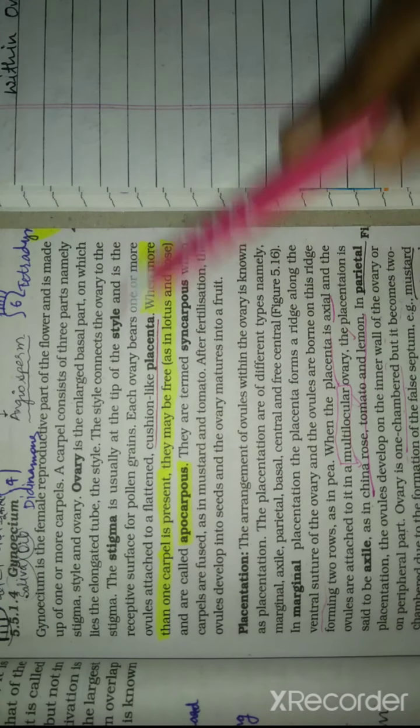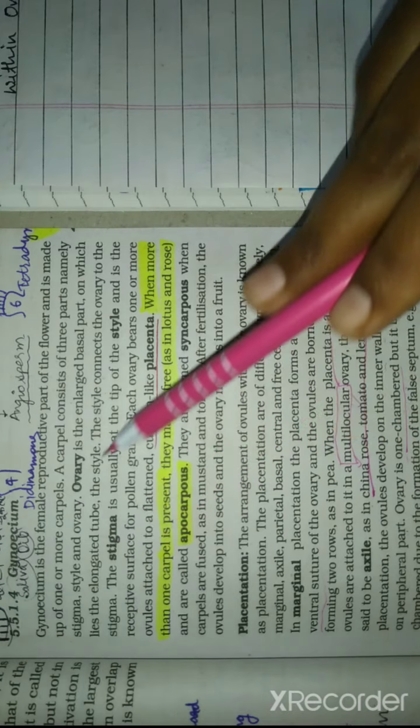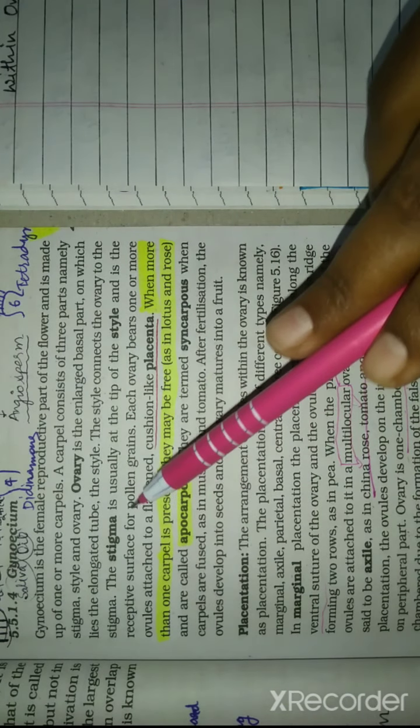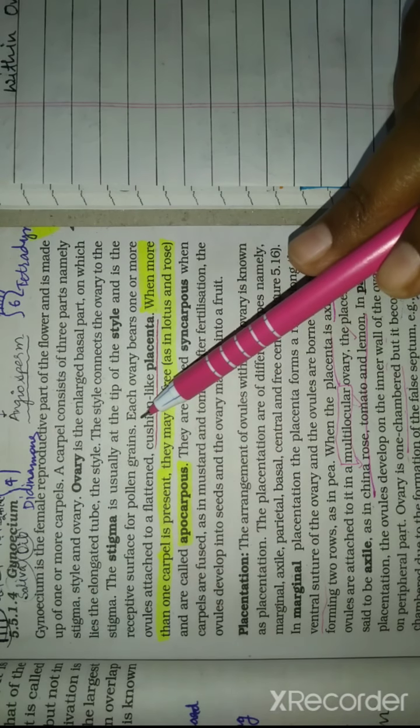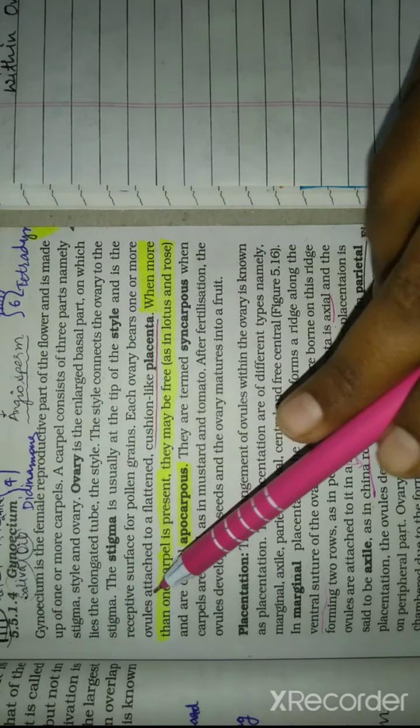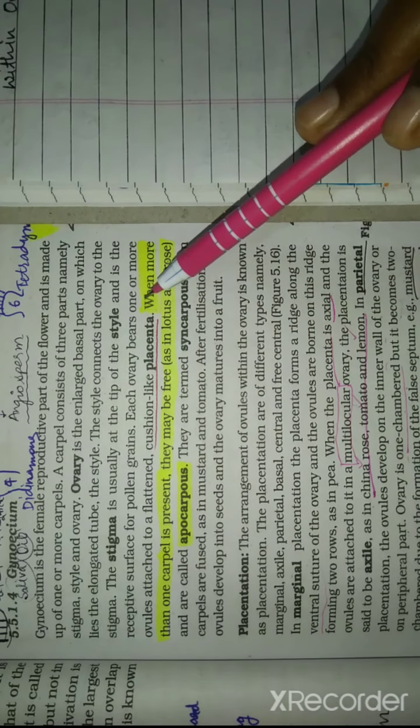Ovary is the largest basal part on which lies the elongated tube-like style. The style connects the ovary to the stigma. Stigma is usually the tip of the style and is the receptive surface for pollen grains.